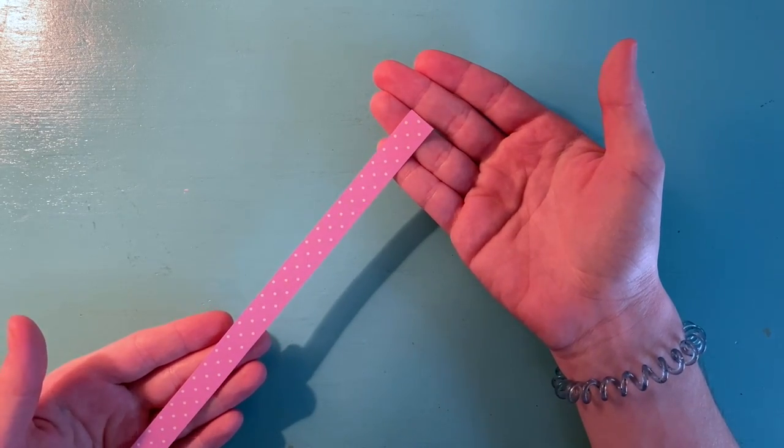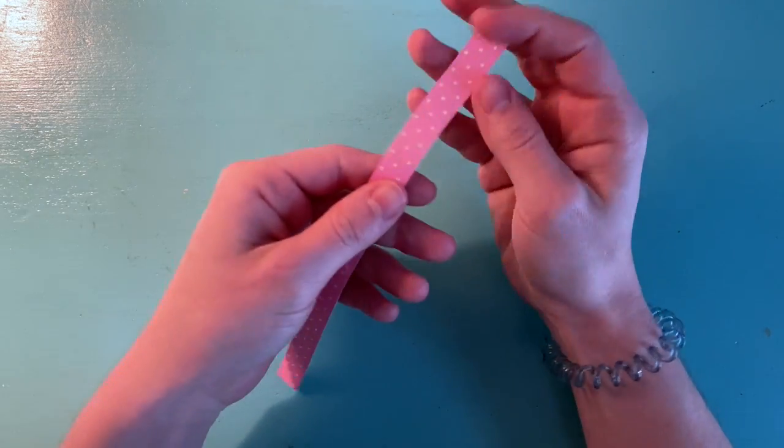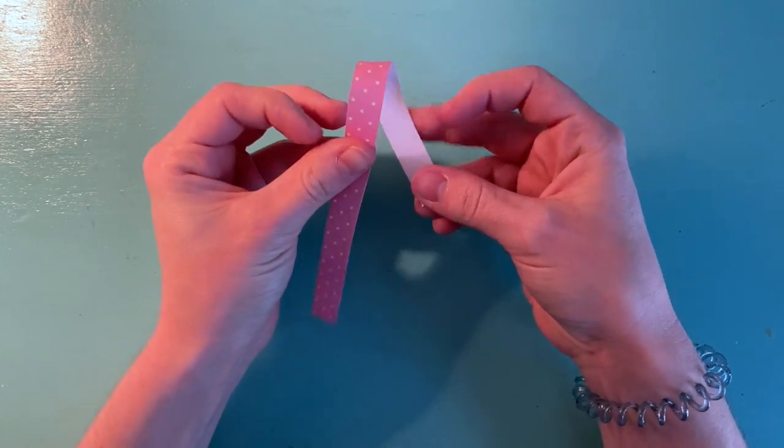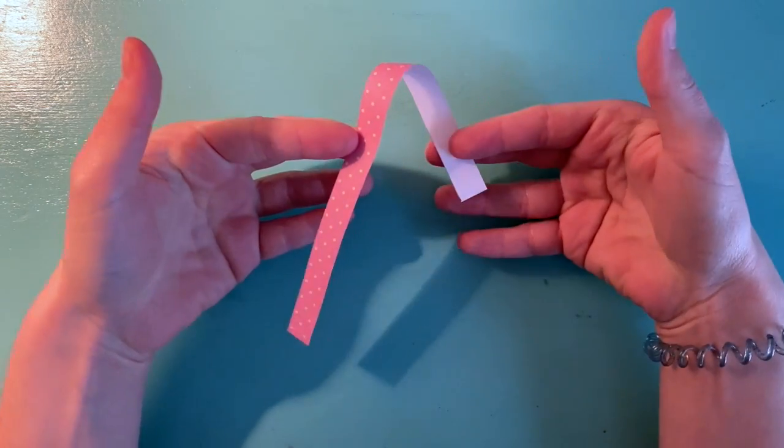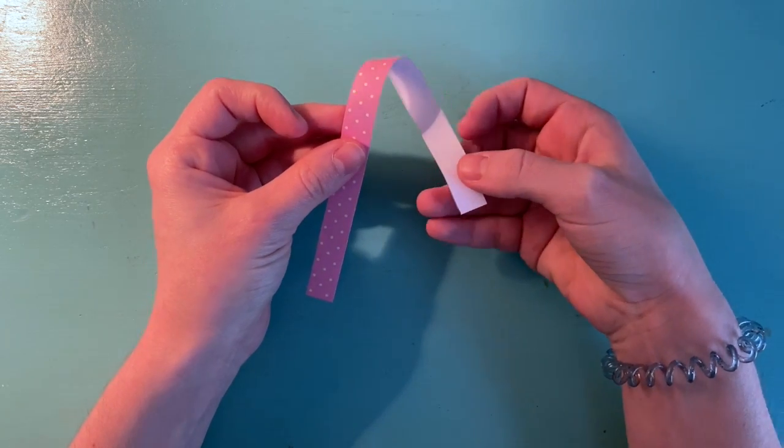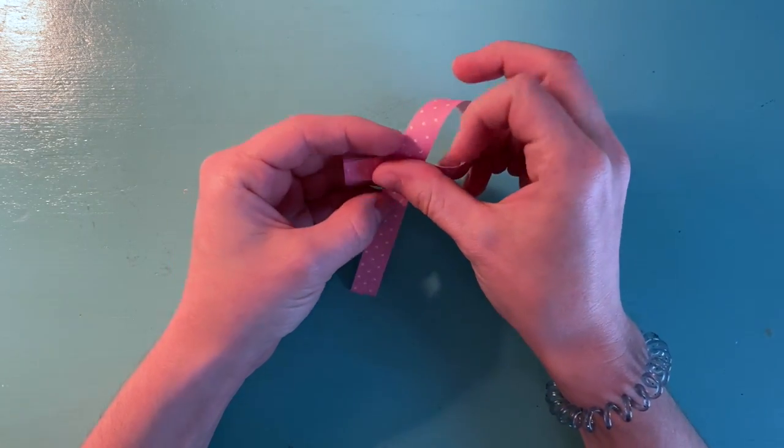Now, once you have your strip, make sure the patterned side or whichever side you want to be on the outside is facing you. You're going to start by taking the top of the strip and bringing it down, sort of making a U shape. Be sure not to crease anything at this point.